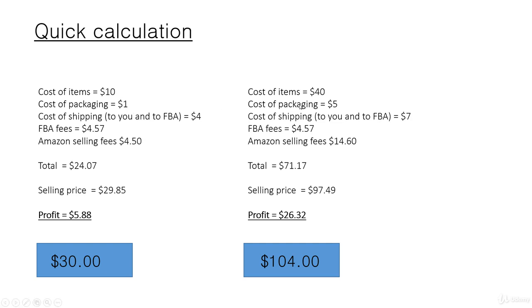With a higher-priced bundle, you would want the packaging to reflect that. Your packaging can give your bundle a much higher perceived value — packaging and presentation can give your bundle a higher perceived value in the eyes of the customer. Your profit on this higher-priced bundle with a selling price of $97.49 is over $26, whereas with the selling price of $29.85 your profit is only $5.88. So this is something to think about, but it's going to depend on your budget as well.